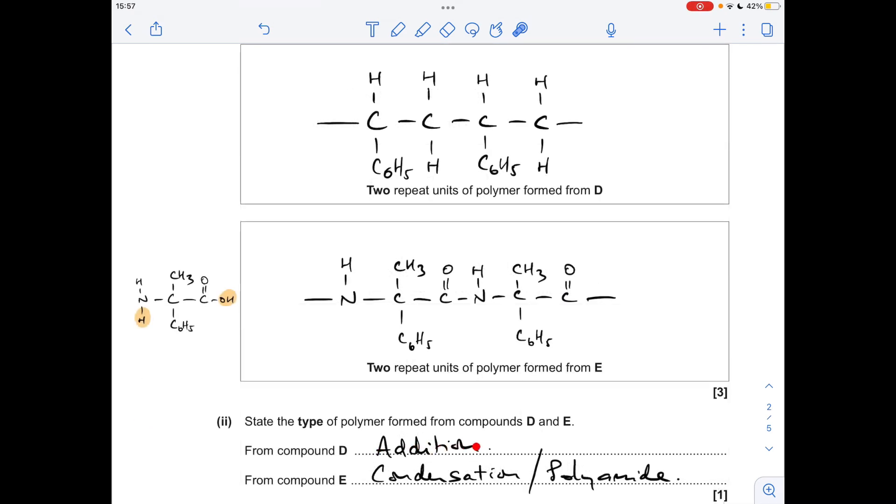Compound D is an example of an addition polymer, so it's effectively the adding together of those alkene monomers, whereas compound E is formed by a condensation reaction, so that's the removal of this H2O molecule. Or you could go for polyamide for compound E because that is an amide bond.